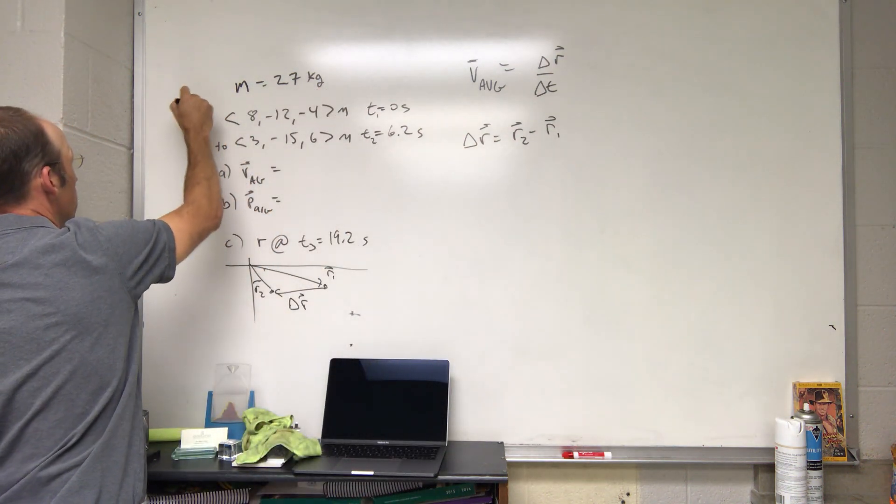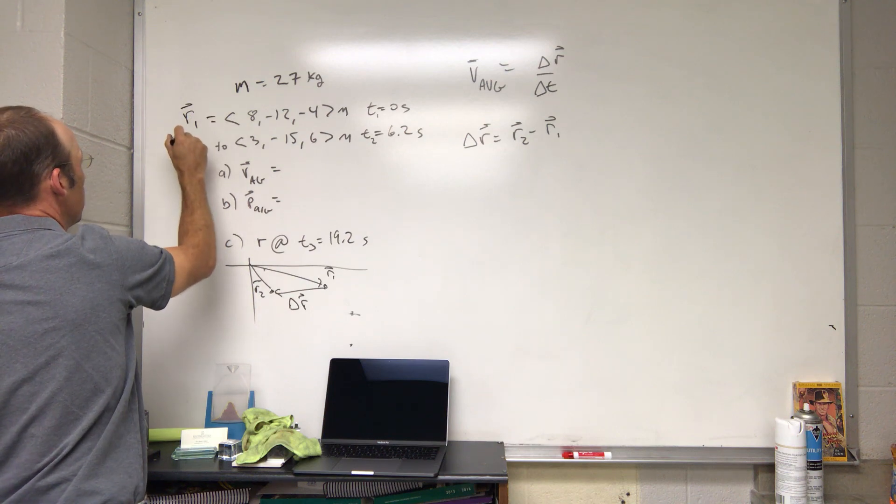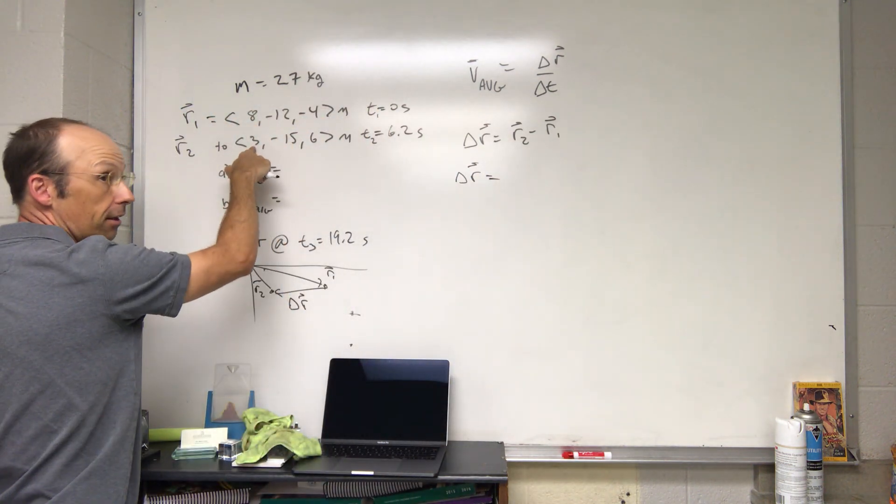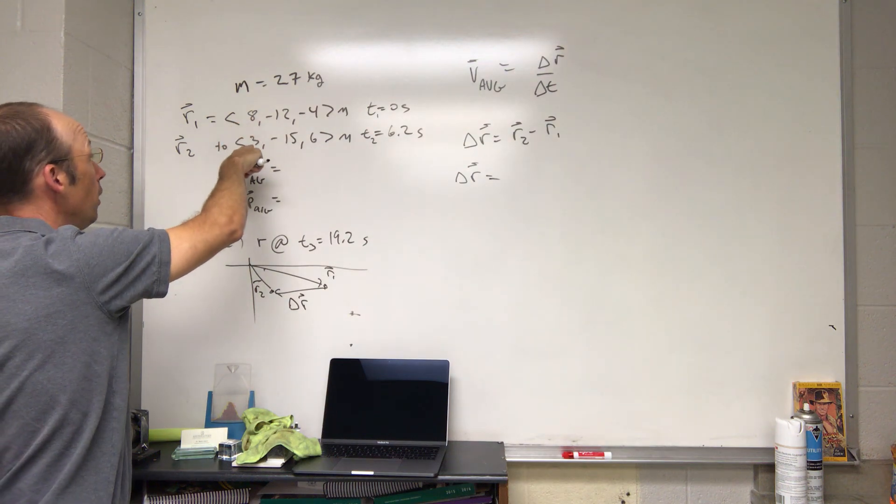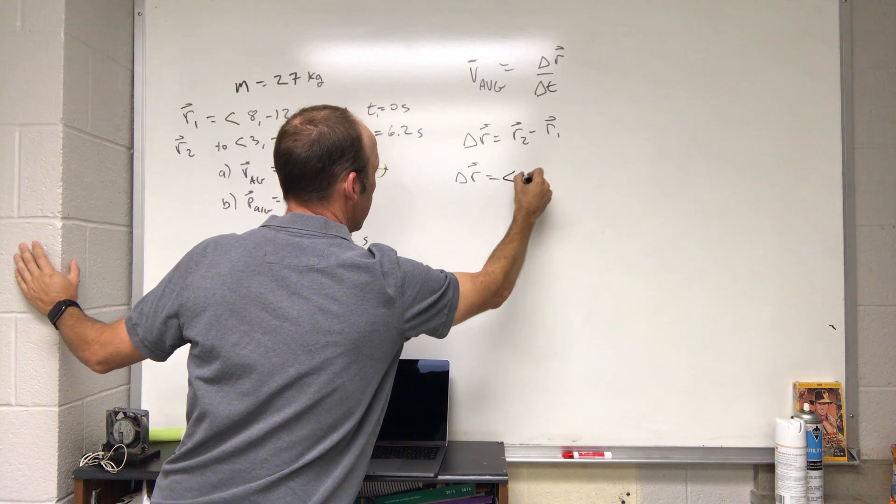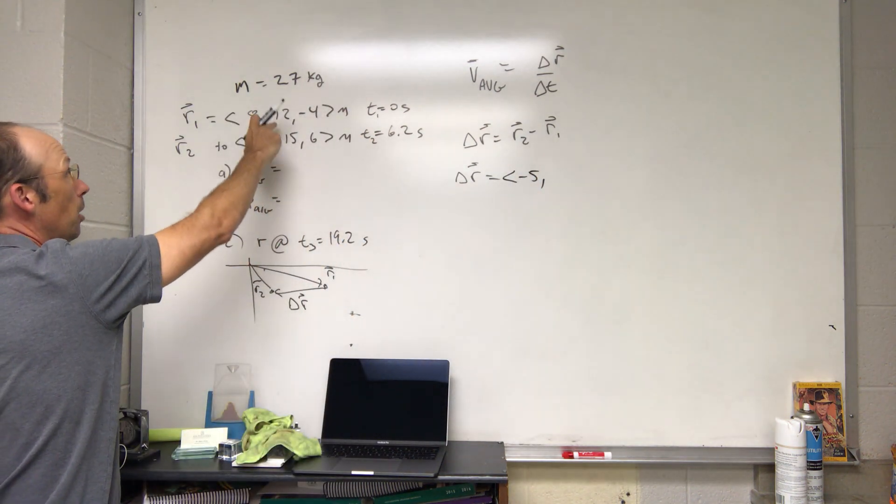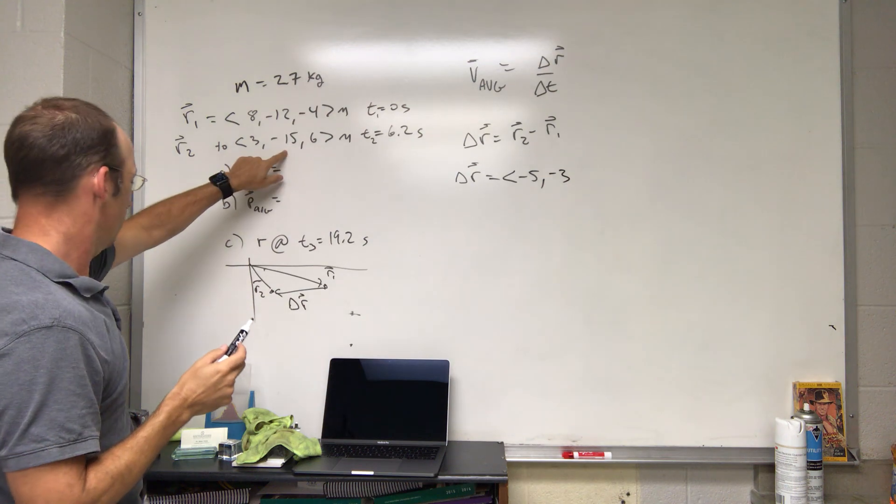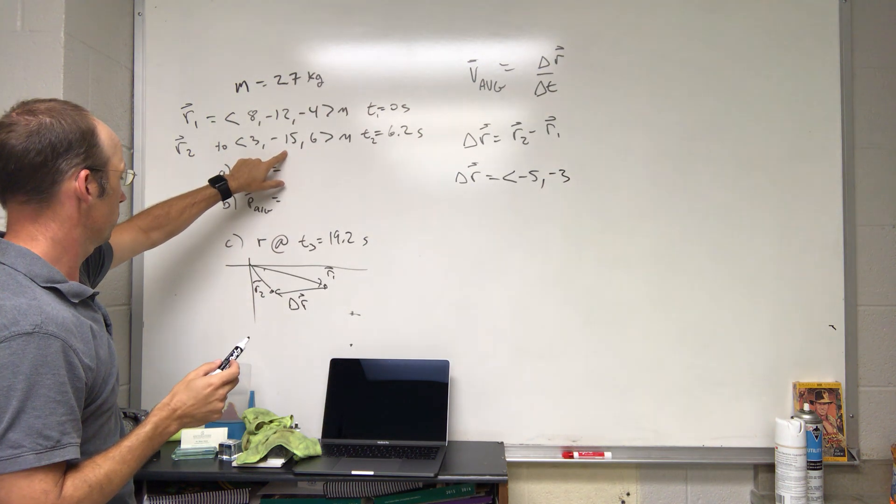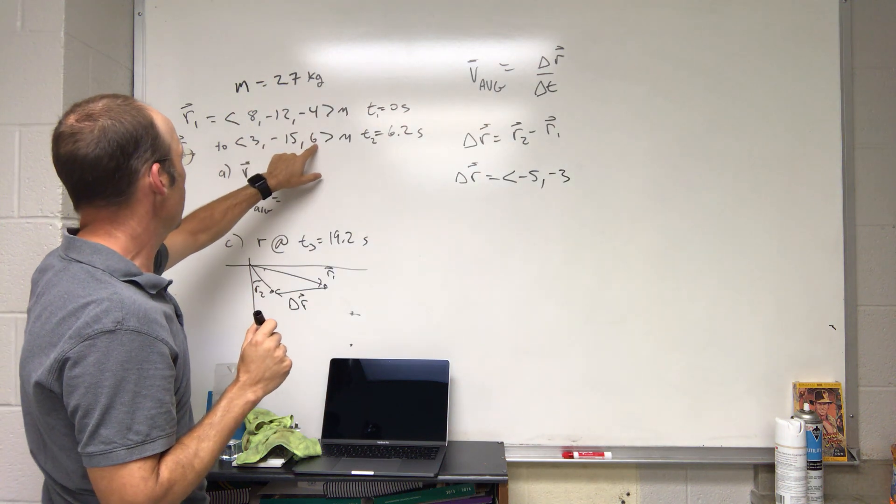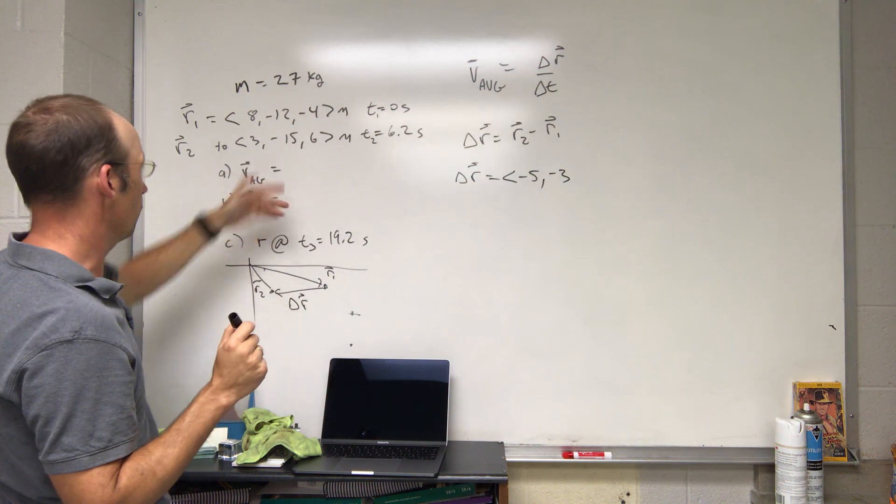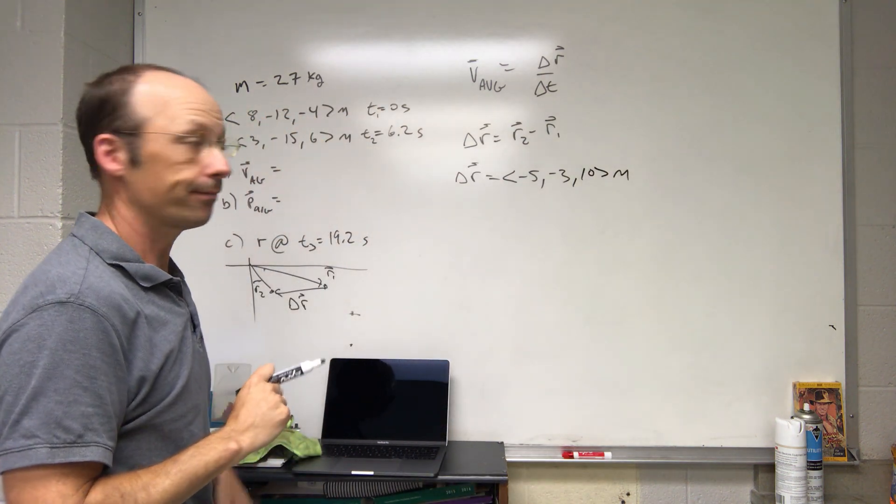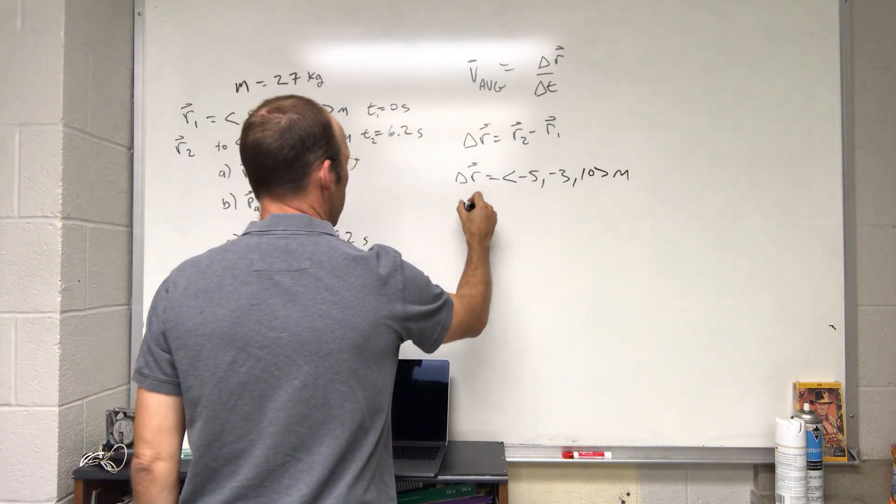So delta r is going to be r2 minus r1. That's going to be this component subtract that component in component form. I get 3 minus 8, so I get negative 5. Then I get negative 15 minus negative 12, that's going to be negative 3. Then I get 6 minus negative 4, that's also moving this way, 6 minus negative 4 is going to be 10.